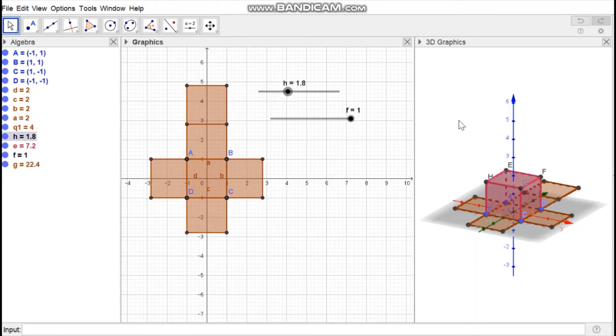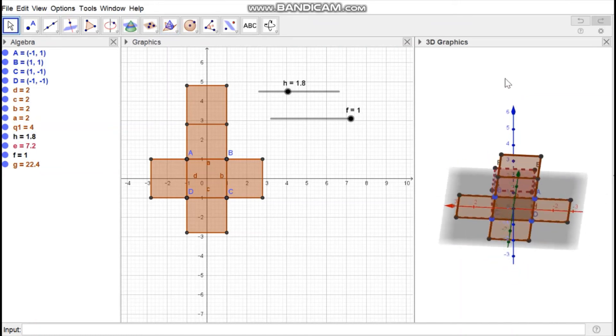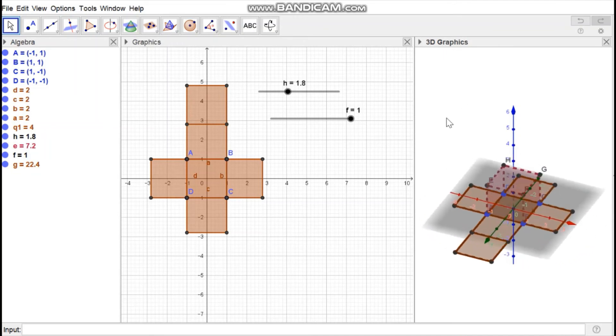For rotating the 3D view, you can simply click and drag the cursor, and it will start rotating.